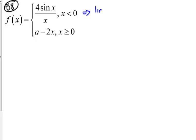So the limit of this top part as we approach 0 of 4 sin of x over x is 4. What that means is if this piecewise function is going to be continuous, the second piece has to be equal to 4 at 0. A minus 2x has to be equal to 4 when x equals 0.